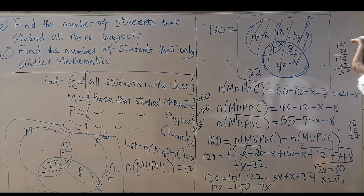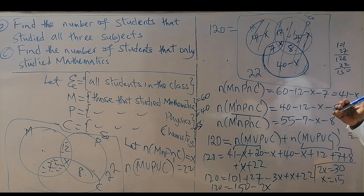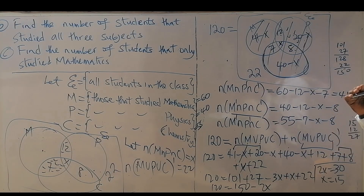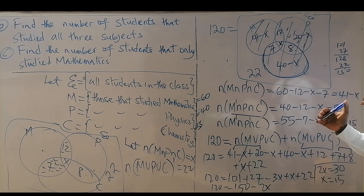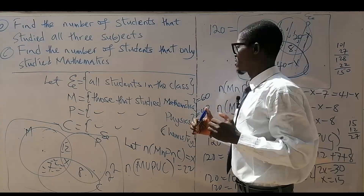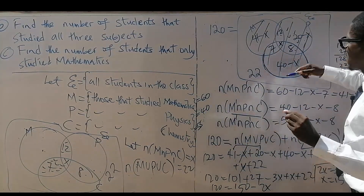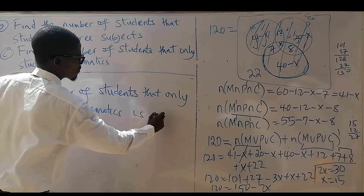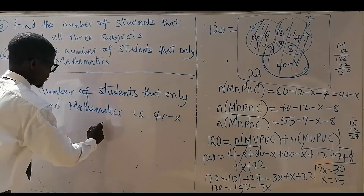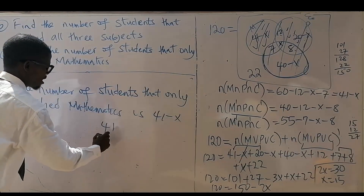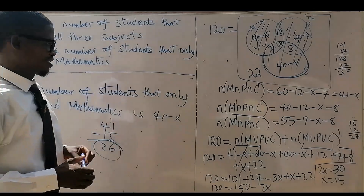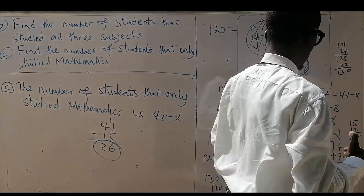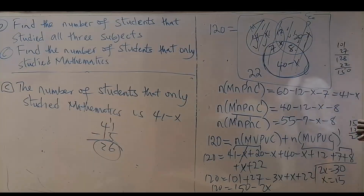For the last part, find the number of students that study only mathematics. The number of students that only studied mathematics is 41 minus X, which is 41 minus 15, and that equals 26. So 26 is the number of people that study only mathematics.